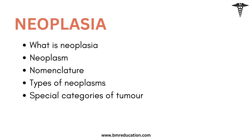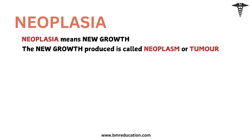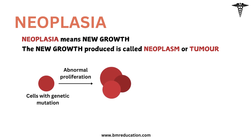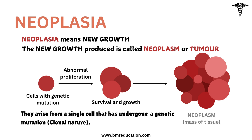What is neoplasia? Neoplasia means new growth. The new growth produced is called neoplasm. Any neoplasm in the body arises from a single cell that has undergone genetic mutation or multiple mutations. Therefore, neoplasms are clonal in nature. Due to these mutations, these cells have the advantage of survival and growth, resulting in abnormal proliferation and producing a massive tissue called neoplasm.